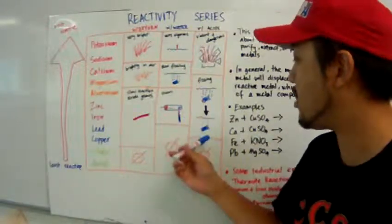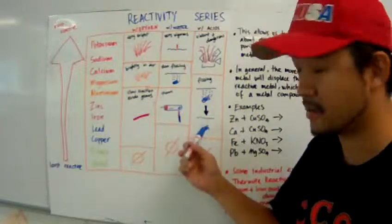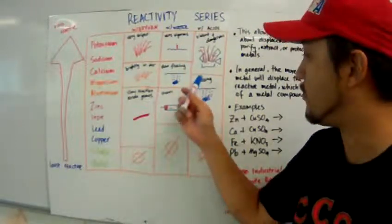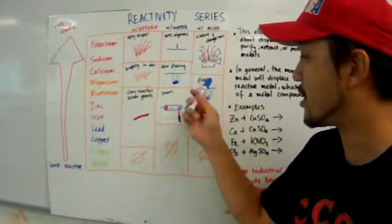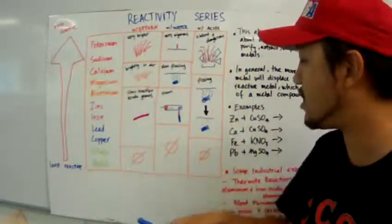From magnesium all down to lead, you will see fizzing. And it fizzes a lot when it's magnesium, and it fizzes less when it's down in the reactivity series.